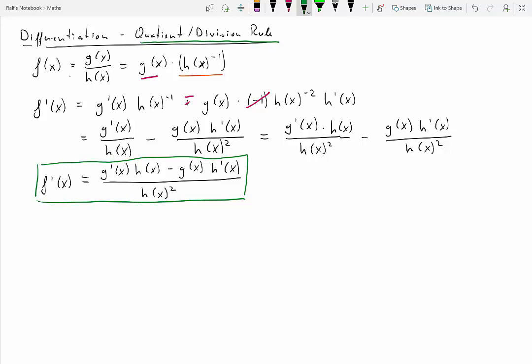So f prime of x equals this term, which I shall frame in a beautiful green. So either you learn that as being the quotient rule, or you remember that if you've forgotten the quotient rule, you just need to apply the product rule with a little peppering of the chain rule. So here we go with an example.